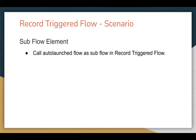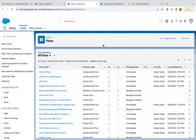I am going to demonstrate the subflow element that is available in Record Trigger Flow. If you use the subflow element in Record Trigger Flow, you won't be able to call any other Record Trigger Flow as a subflow. What you need to do is create an auto-launched flow, and that auto-launched flow you can call as a subflow in Record Trigger Flow. I am going to demo this so that you can understand.